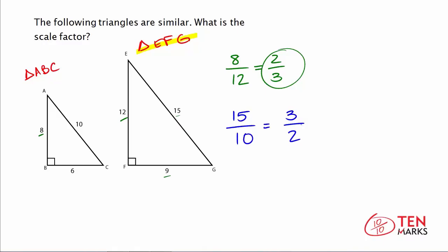And this means if you multiply the measurement in the smaller triangle, triangle ABC, by the scale factor of 3 halves, you'll get an enlarged measurement. And this is because 3 halves is greater than 1. 3 halves is 1 and 1 half.